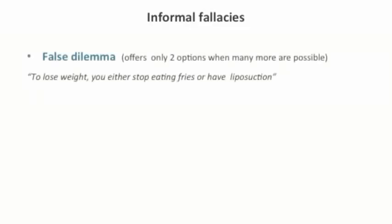There are many varieties of informal fallacies. Here are some of the most common examples. The false dilemma fallacy is when an argument offers only two conclusions when many more are possible. For instance: 'To lose weight, you should either stop eating fries or have liposuction.' This is a fallacy, as many other options are possible to lose weight, such as taking up exercise.